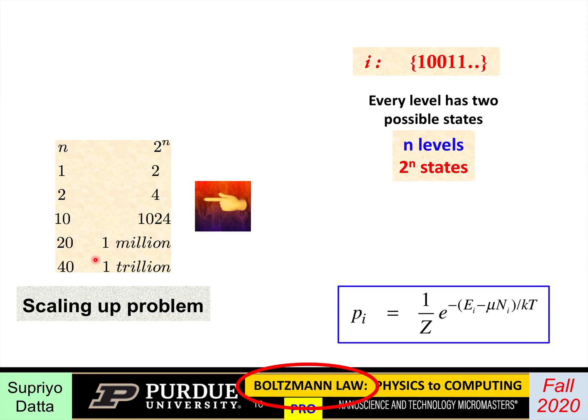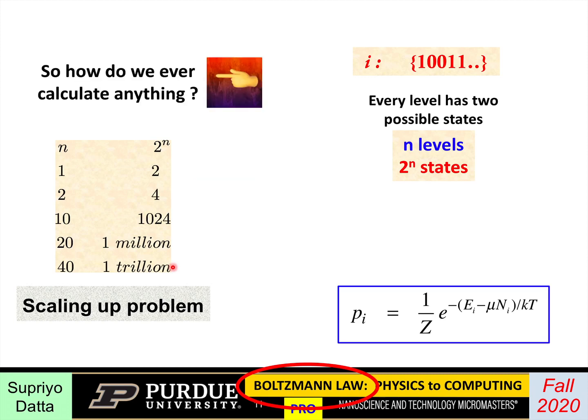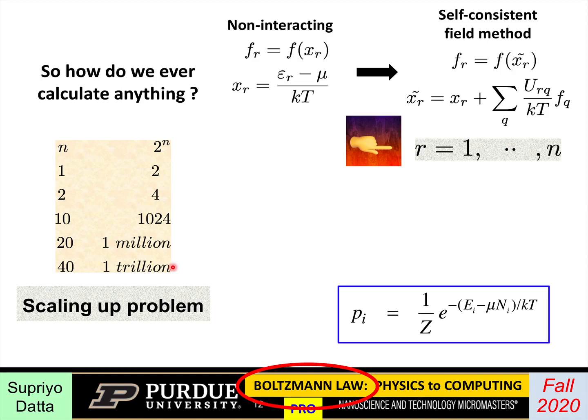So you might say, well, then how do we ever actually calculate something? Because that seems like a lot of possibilities to account for and do calculations on. That's where what is widely used, and you have seen this if you are taking a course on solid state devices or if you are doing atomic structure calculations, you have used some version of this. And that's the self-consistent field method.